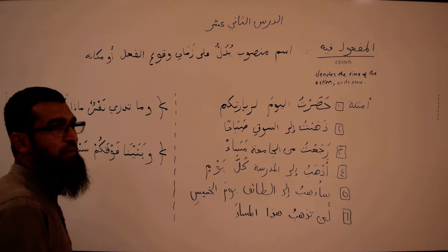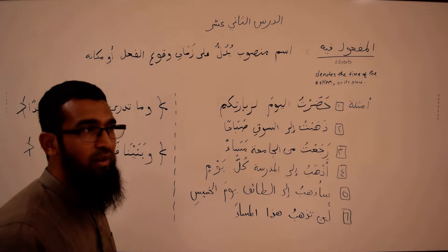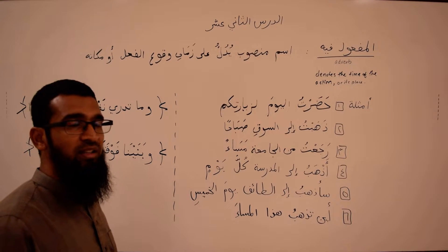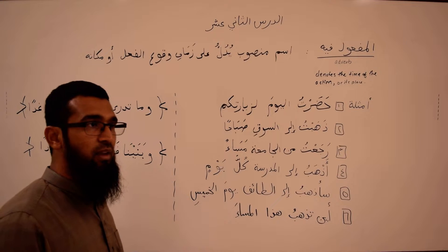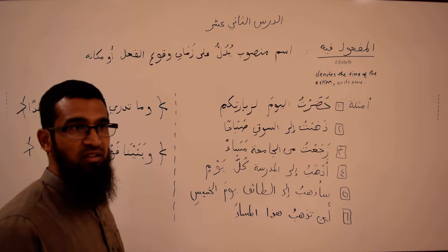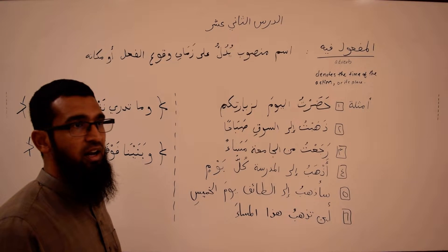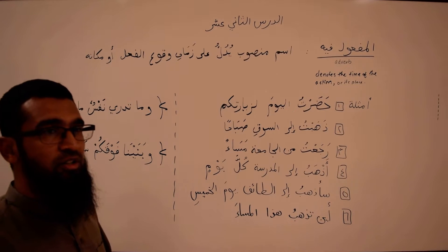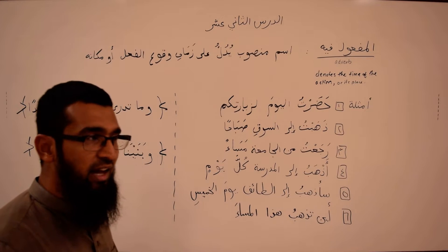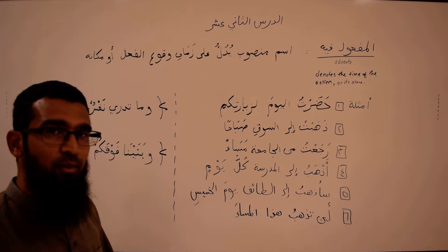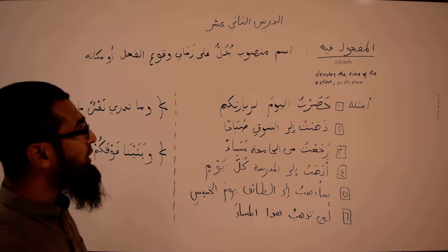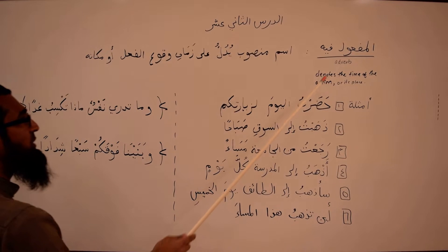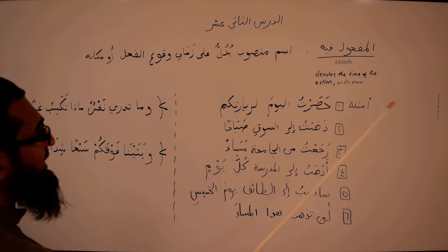For instance in English we would say 'I went to the university,' but if we add a word such as 'I went to the university yesterday,' or 'I go to the madrasa everyday,' or 'I go to school in the afternoon' — that extra word 'in the morning,' 'in the afternoon' is telling us about the time when the action took place. Similarly in Arabic, we tell the time of the action by using the مفعول فيه.